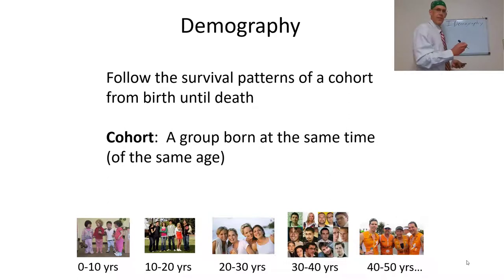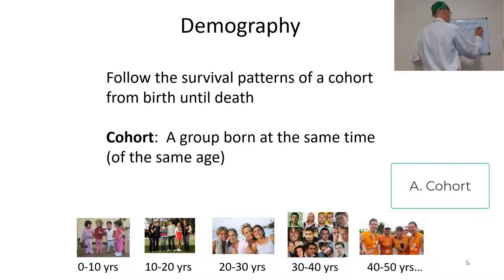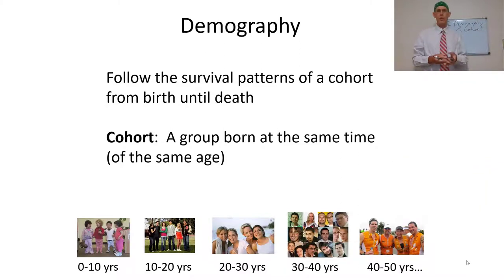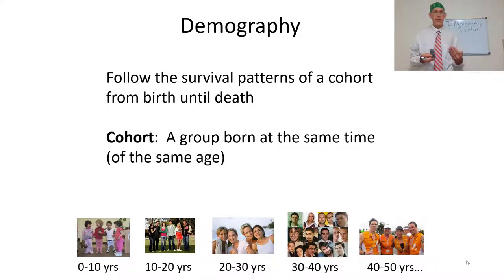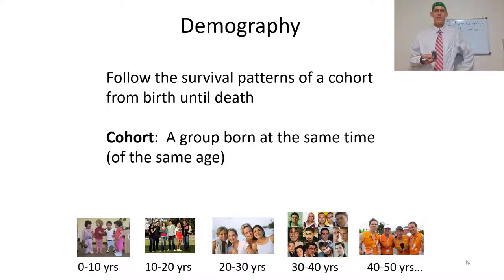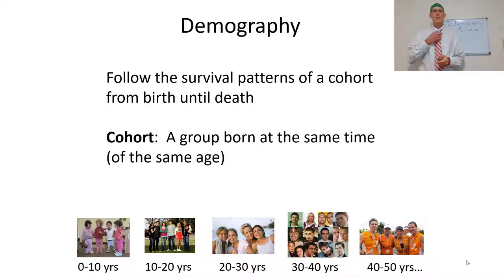One way to study this is to use a cohort. A cohort is a group of individuals born at the same time — like a group of college students that start college at the same time. We can track them to see attrition rates each year. There's actually a famous nurses study in Britain where they measured a cohort of babies all born in the same hospital during the same year, and this has been an ongoing study for quite some years.